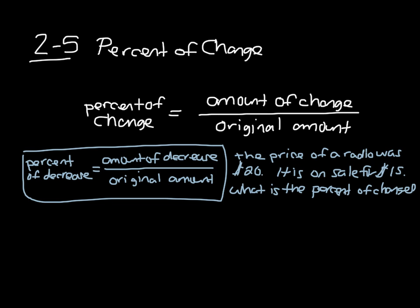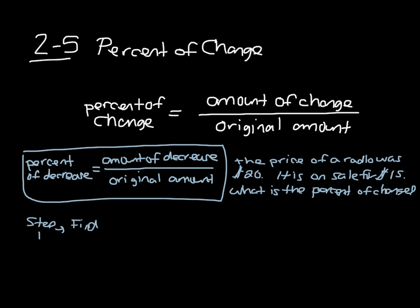Well, step 1 is going to be to find the amount of decrease. Well, to find the amount of decrease, we had it originally at $20, it's on sale for $15. So if we go, okay, $20 minus $15 is going to be $5. It decreased $5.